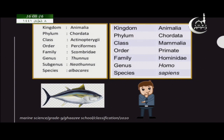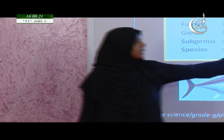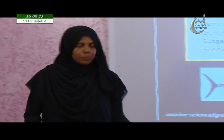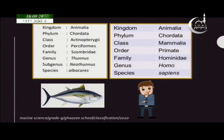For example, what is the scientific name for humans? It is Homo sapiens. The scientific name for humans is Homo sapiens.